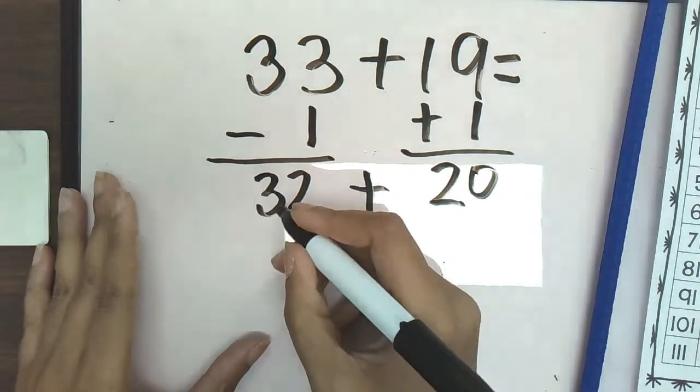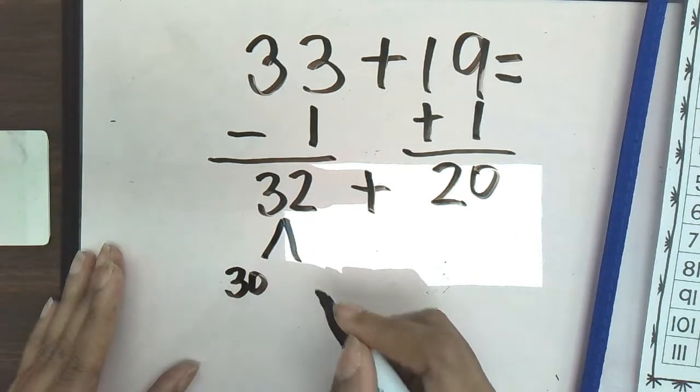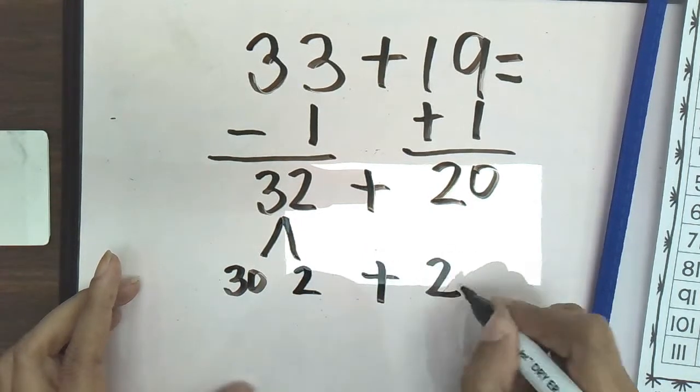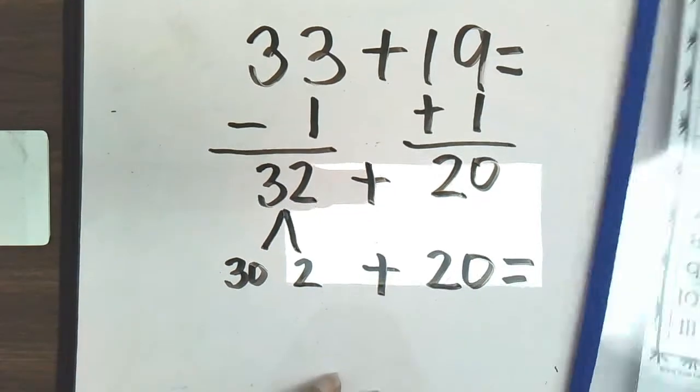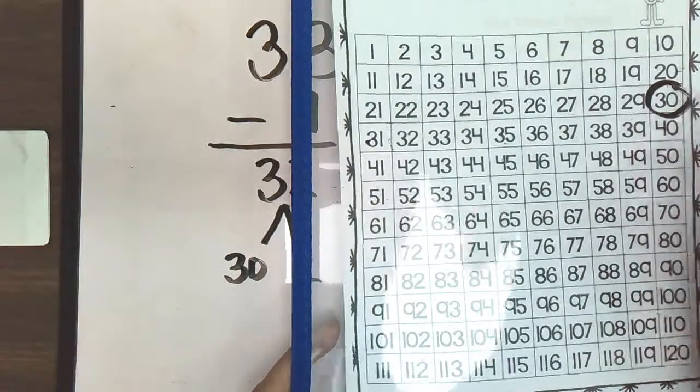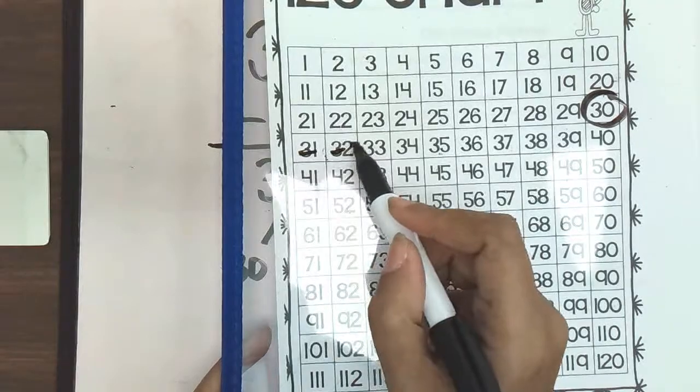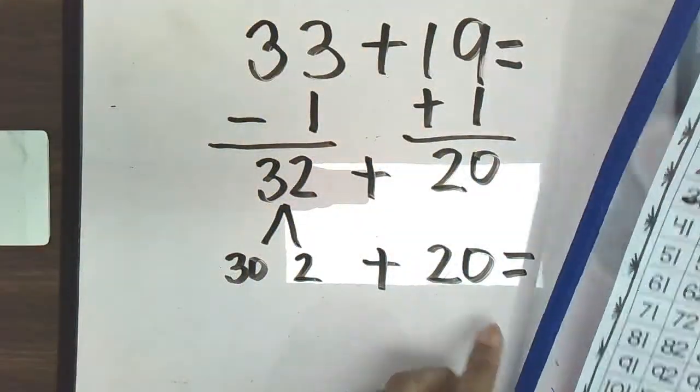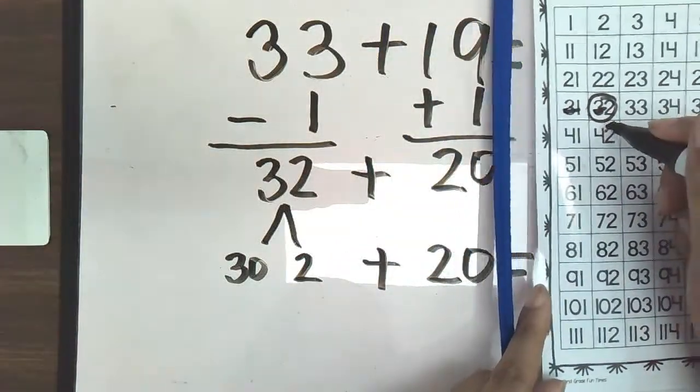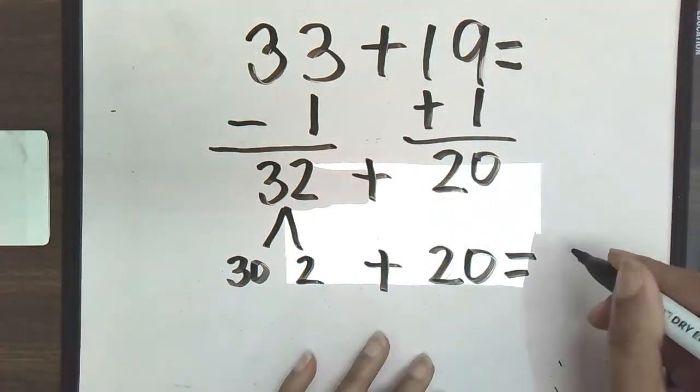So now our new equation is going to be 32 plus 20. Now again, we can further decompose this number to make it a 10, which is 3 tens, which is 30, and 2 ones. Now we have 30 plus 2 plus 20. So we are going to find 30 on our 120s chart plus 2. So we're going to go over 1, 2. Here's our 2. And then we need to add 20. And remember, going down in our columns is going to be adding by 10. So we go down 2 tens. Here's 1 ten and 2 tens. So our final answer is going to be 52.